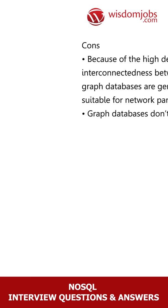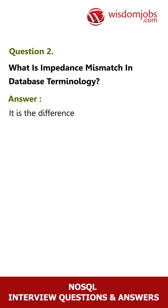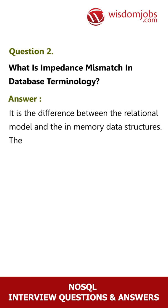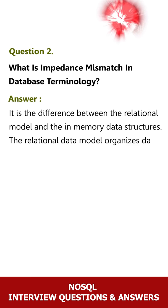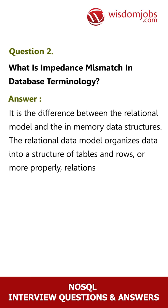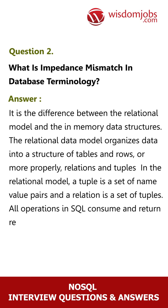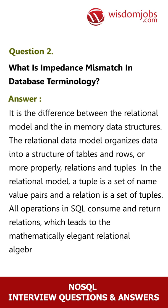Question 2: What is impedance mismatch in database terminology? Answer: It is the difference between the relational model and the in-memory data structures. The relational data model organizes data into a structure of tables and rows, or more properly relations and tuples. In the relational model, a tuple is a set of name-value pairs and a relation is a set of tuples. All operations in SQL consume and return relations, which leads to the mathematically elegant relational algebra.